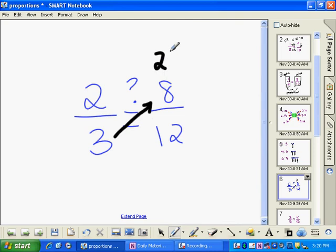3 times 8 is 24. 12 times 2 is 24. And these two are equal to each other, so, therefore, these two ratios form a proportion.